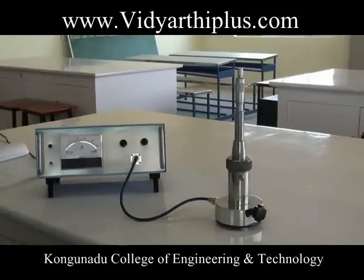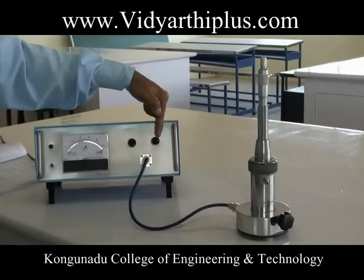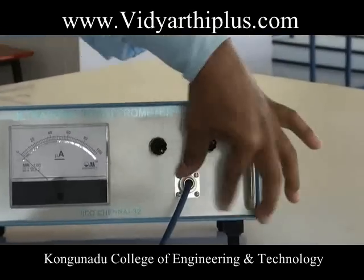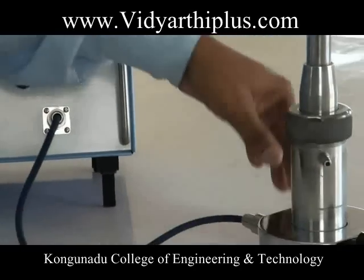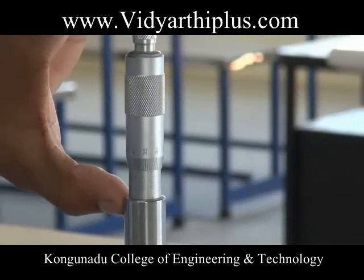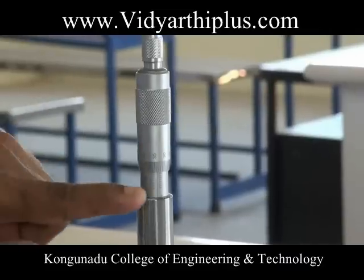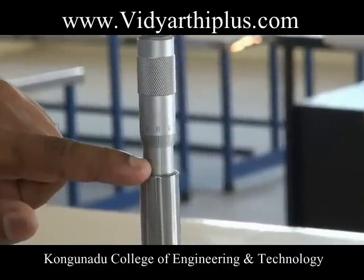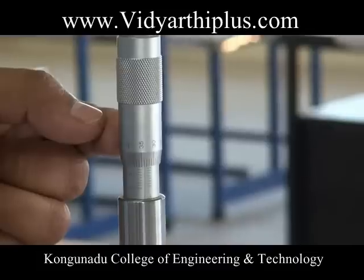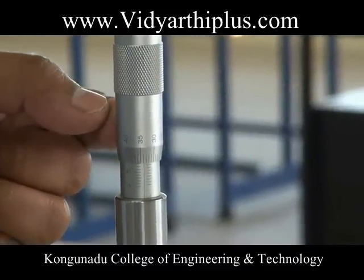Before starting the experiment, proper gain should be given and the adjuster should also be properly adjusted. The board is connected with two ends properly. The interferometer part is connected with the micrometer screw, which has two scales: one is the pitch scale that exists vertically, and another is the head scale coincidence existing on the cylindrical disk.